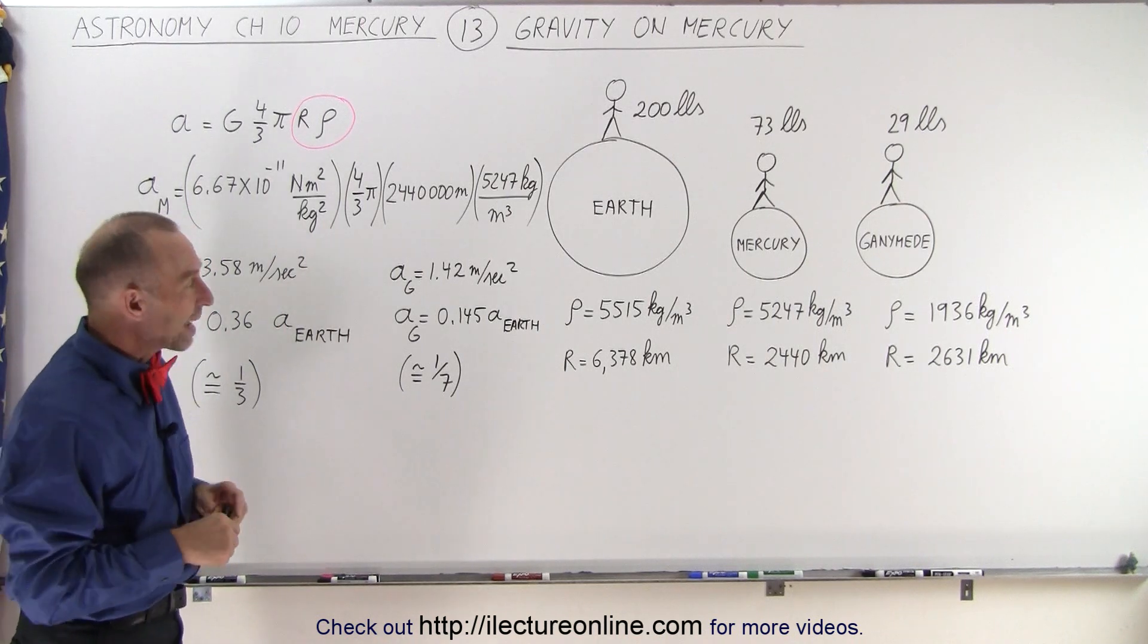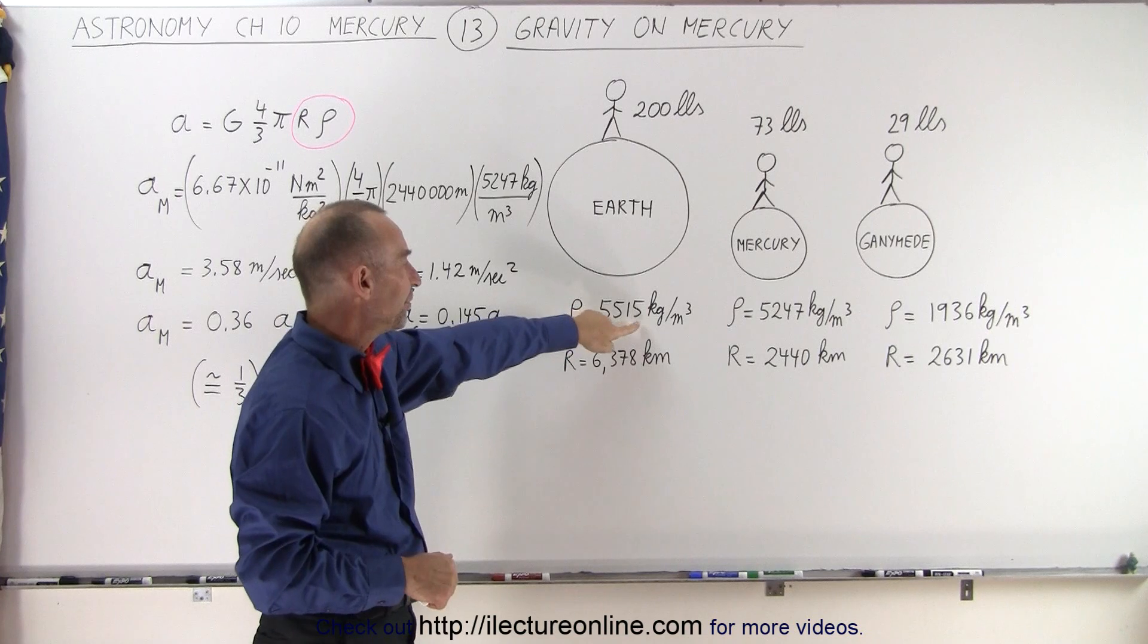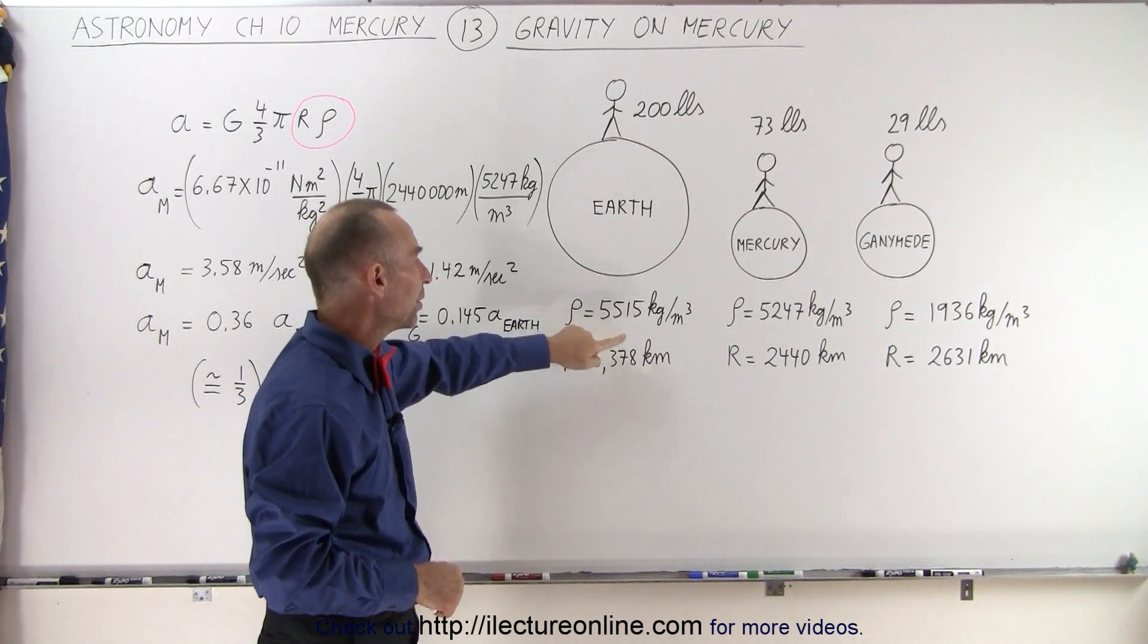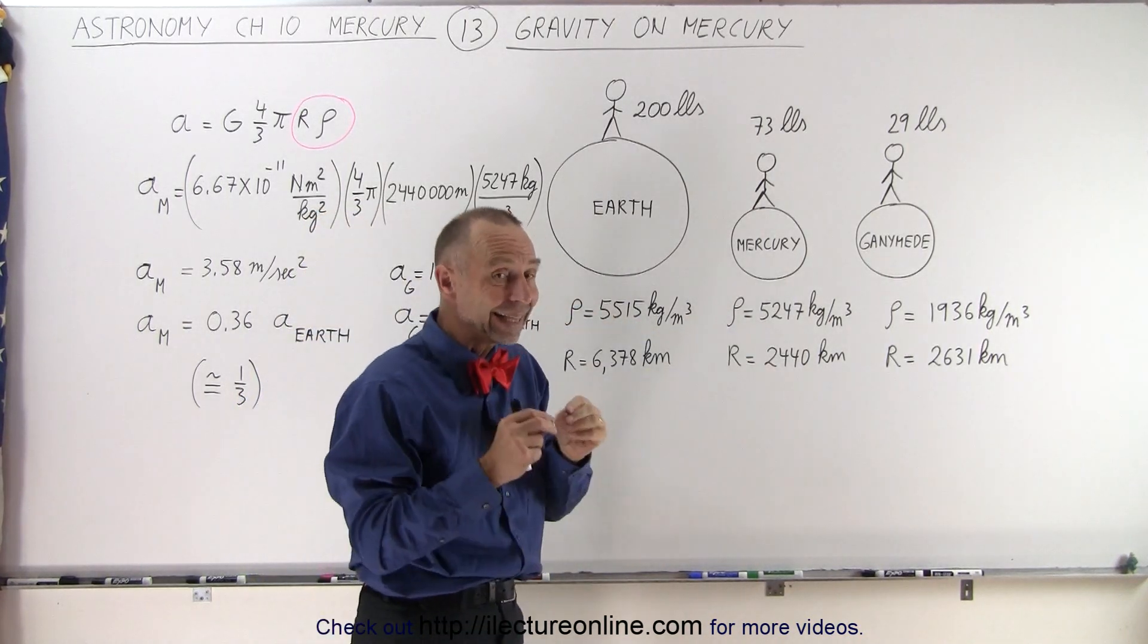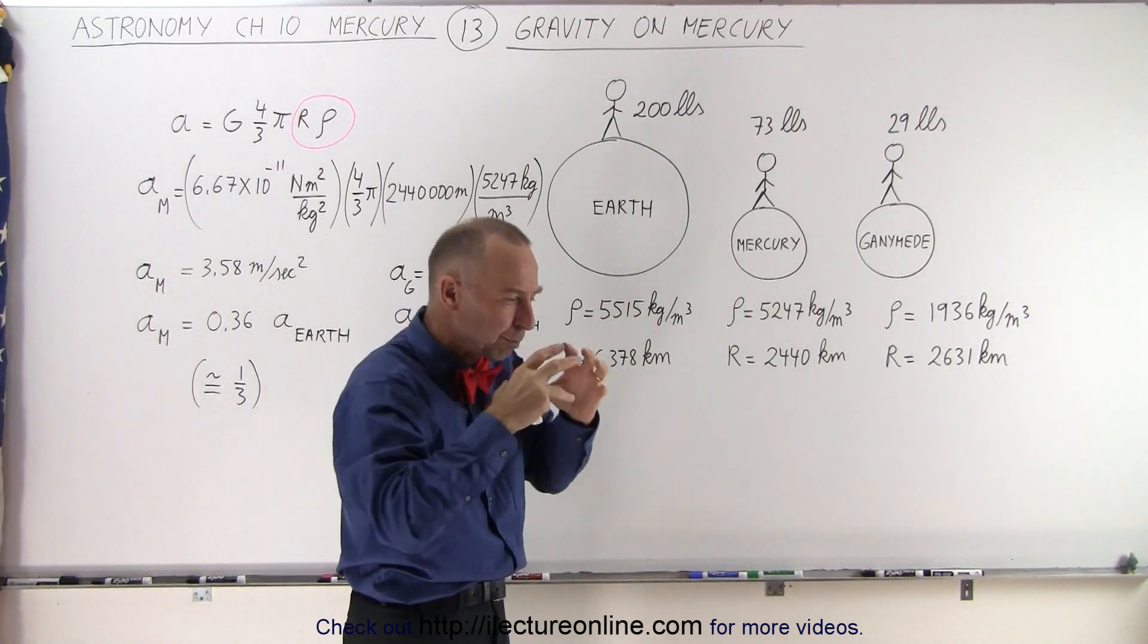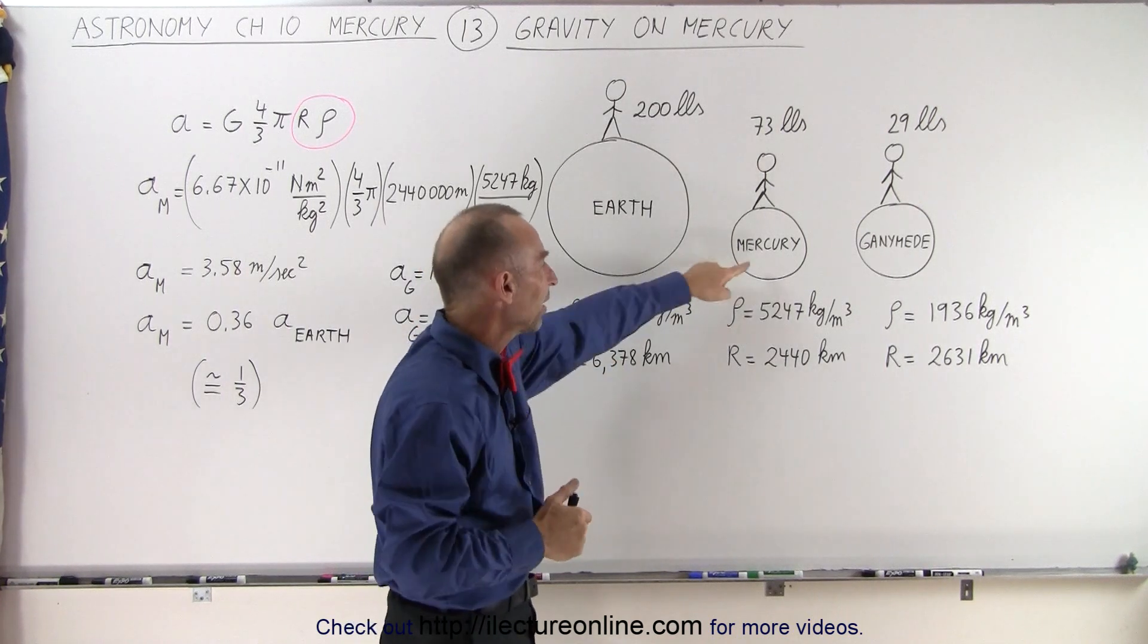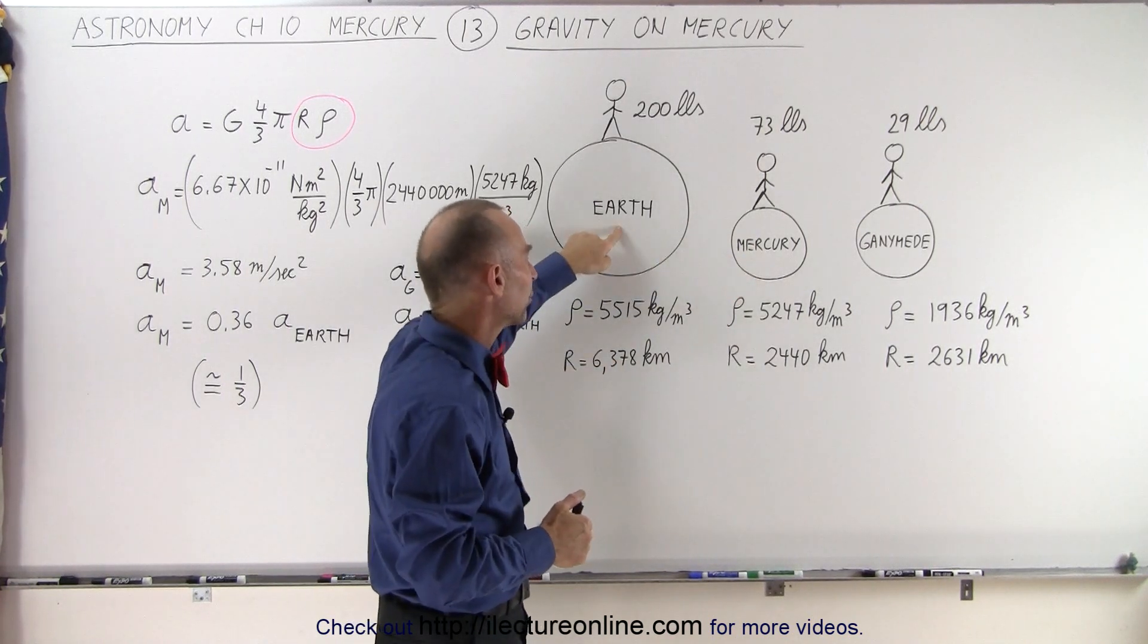So let's see where those numbers came from. The density on the earth is 5,515 kilograms per cubic meter. For Mercury, it's slightly less. Even though it has a higher percentage of metal, it's a much smaller planet. So therefore, the compressed density is not as great for Mercury as compared to the earth.